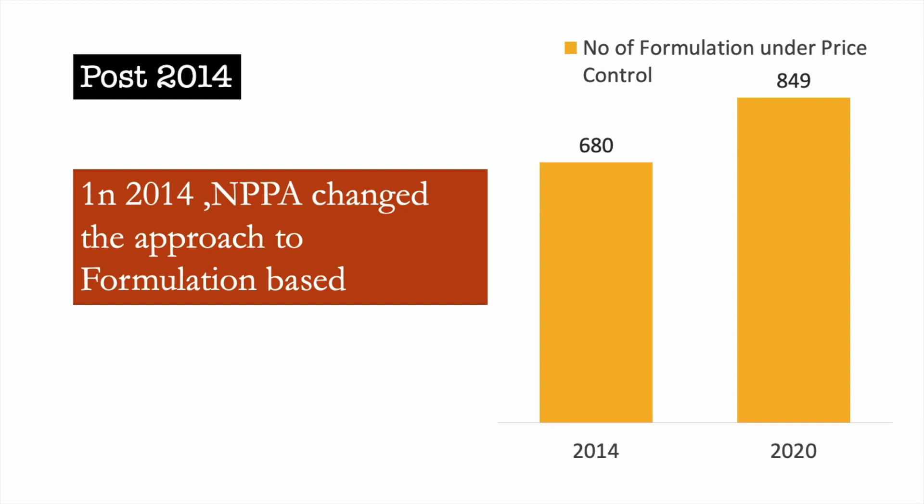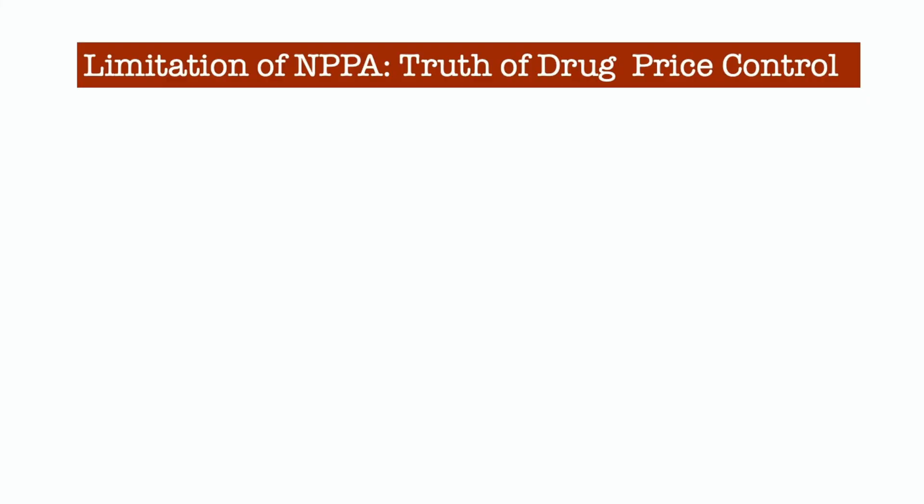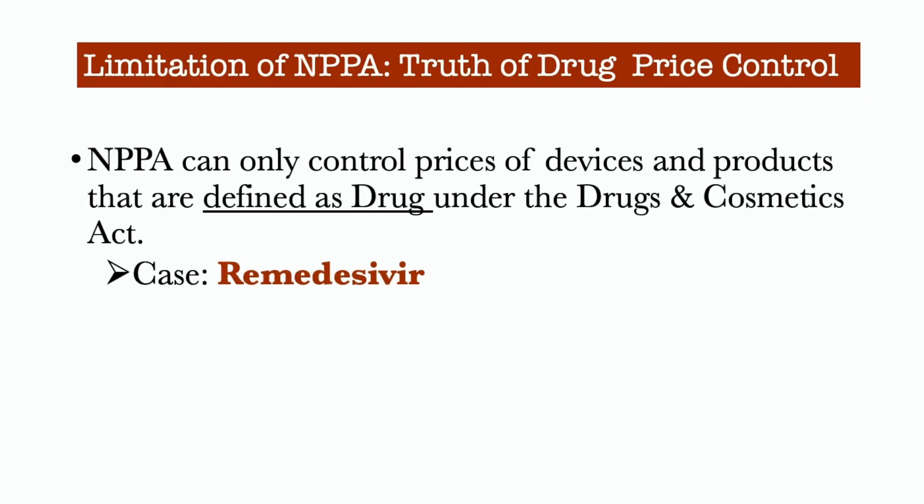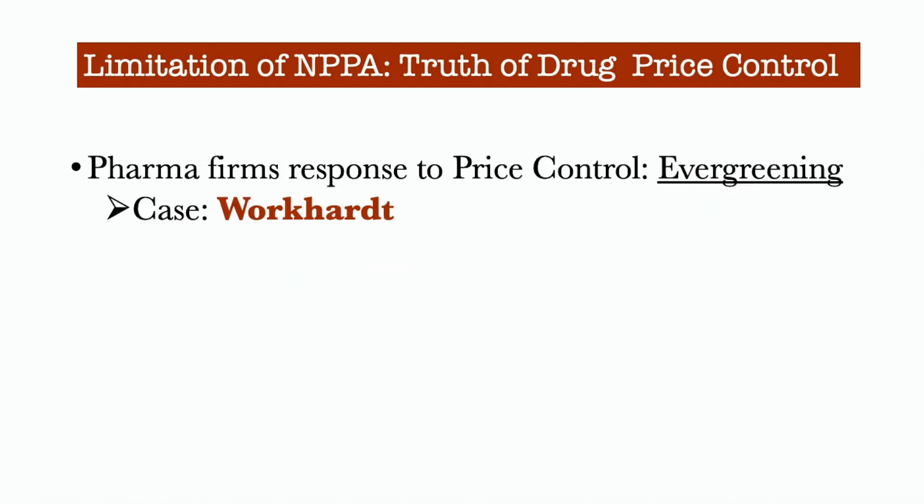But as a citizen of India, this is a good thing. So there has to be a balance between the economy and welfare. NPPA's limitation is that they can only control the prices of devices and products that are defined as drugs. If a drug is not notified, then NPPA cannot act on it. You must have heard the name Remdesivir — this is an antiviral medicine which is basically an experimental therapy for COVID-19. Since it is not defined as a drug in India, black marketers used this to inflate prices tenfold, and NPPA could not intervene.